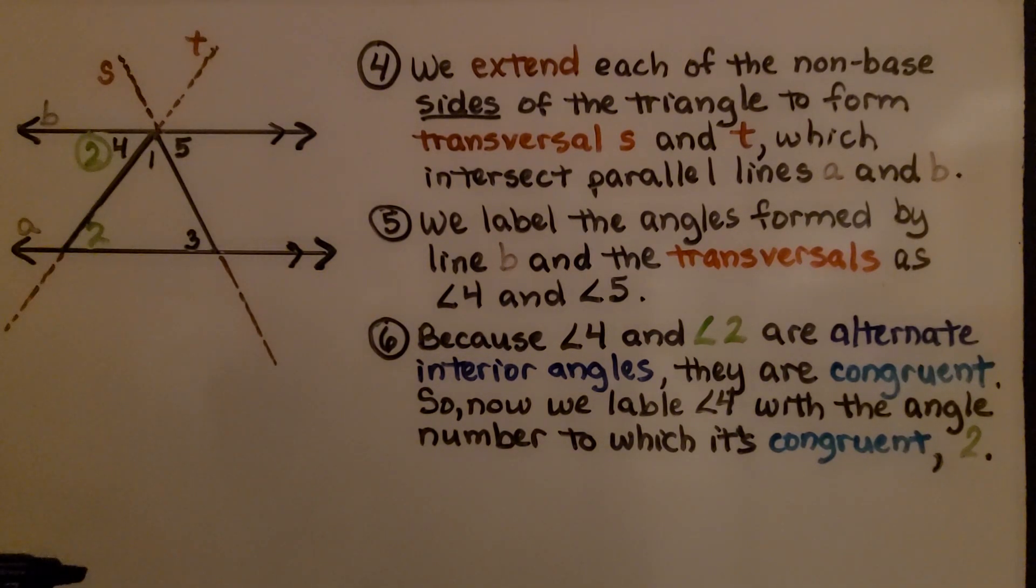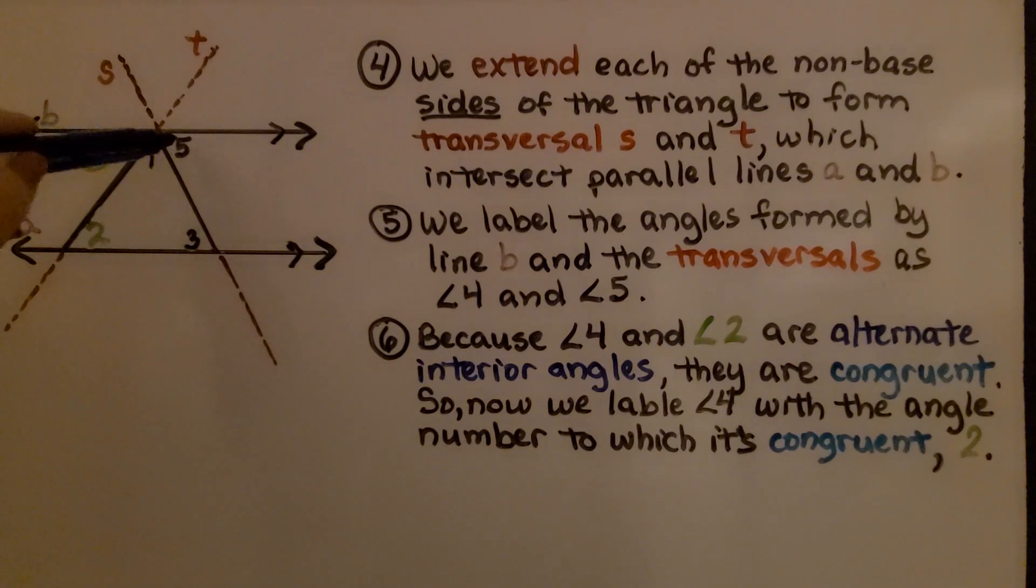which intersect parallel lines A and B. We label the angles formed by line B and the transversals as angle 4 and angle 5.